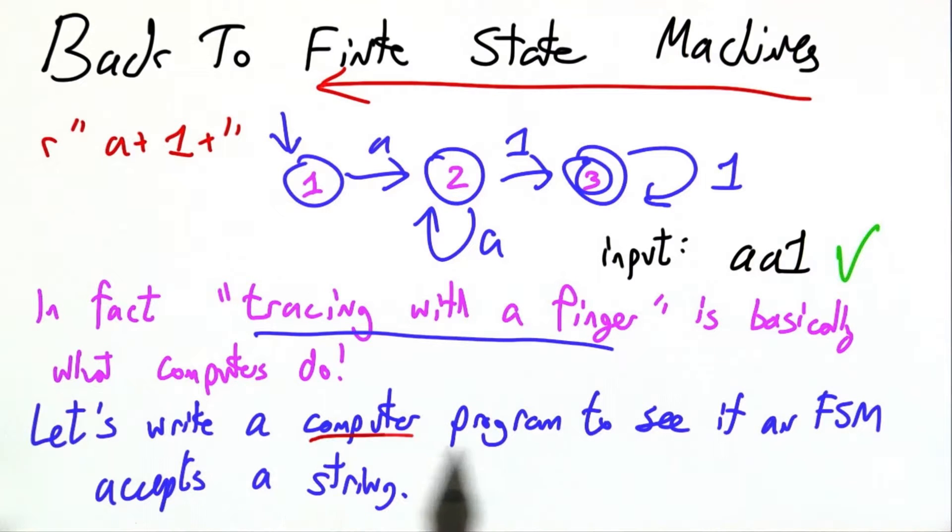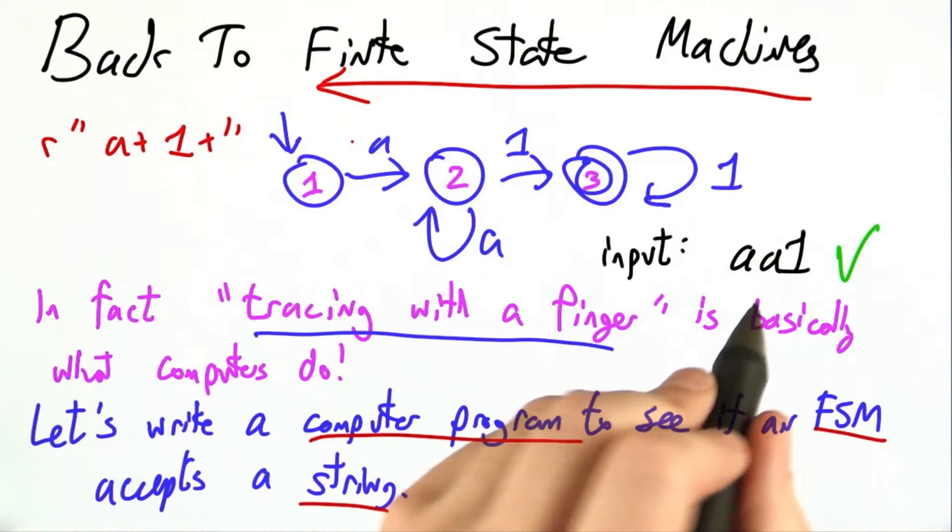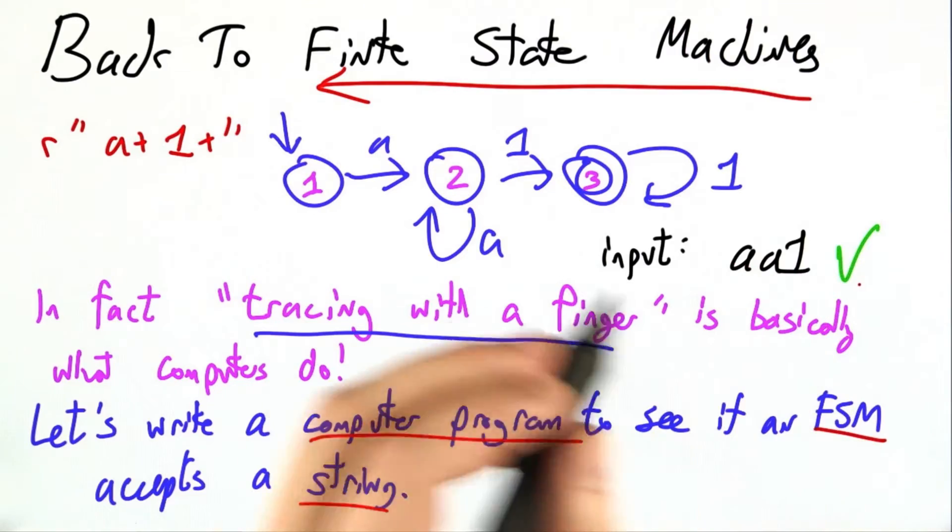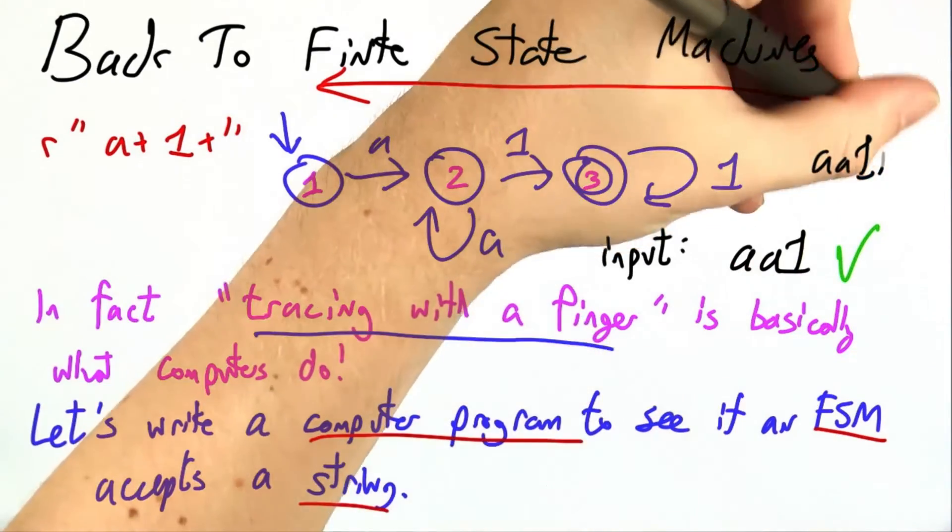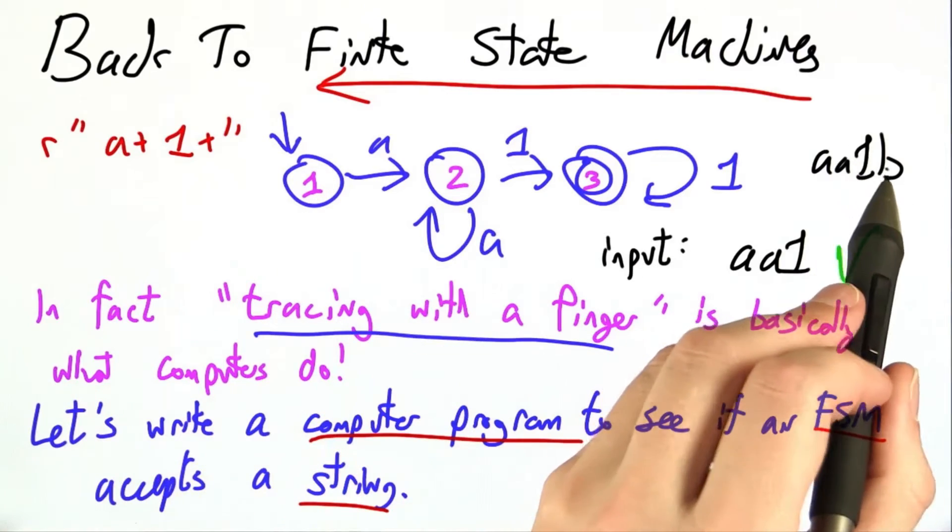So let's do this together. We'll write a computer program in Python to check to see if a finite state machine accepts a string. So if I somehow give it this finite state machine and AA1 as input, it should say true. If I instead give it AA1b, it should say false because that string is not accepted.